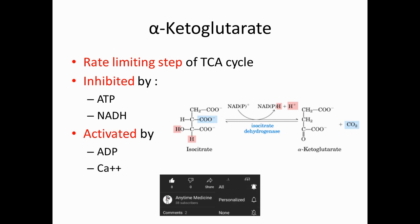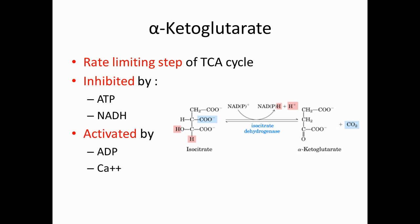The next step of the TCA cycle is alpha-ketoglutarate, which is the first rate-limiting step. It is inhibited by ATP and NADH, and activated by ADP and calcium. As you can see in the picture, isocitrate is converting into alpha-ketoglutarate with the help of isocitrate dehydrogenase, and in this process it also produces a carbon dioxide molecule.